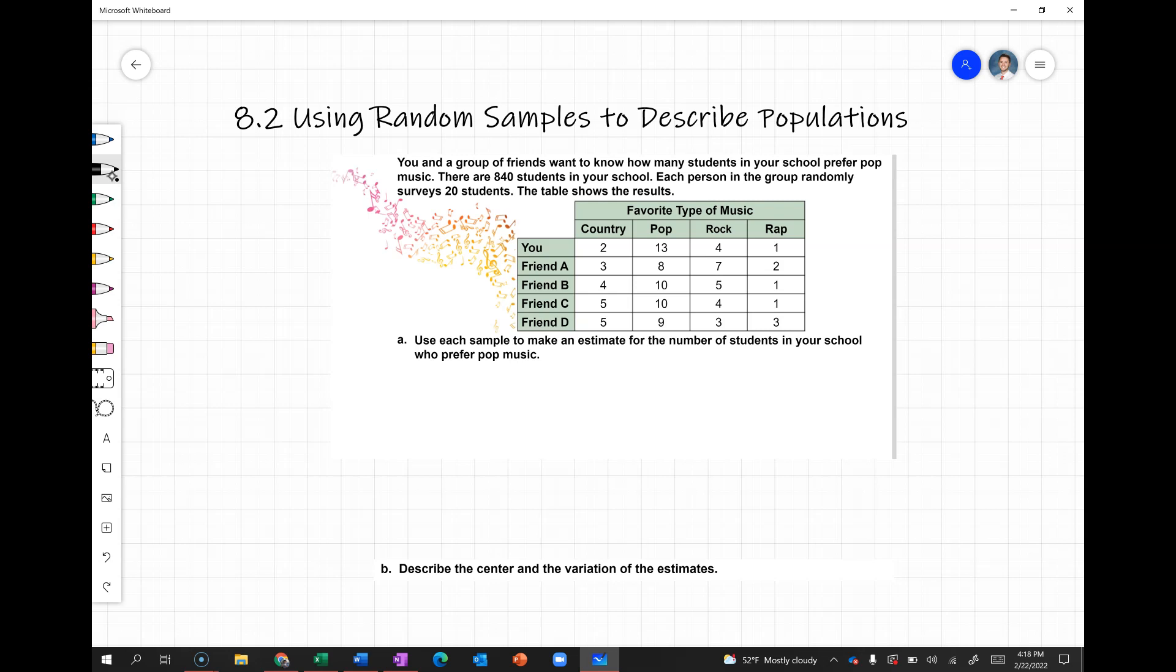If we look at this, 13 out of the 20 people that you surveyed said they prefer pop music, so that's 13/20. We want to apply that to the total 840 students in your school. We could either find 13/20 as a percent and then multiply that by 840, or we can set this up as a proportion.